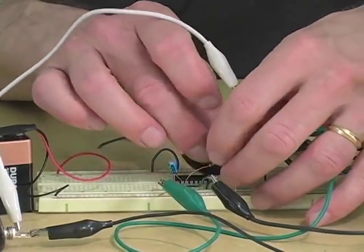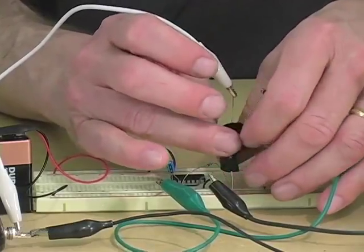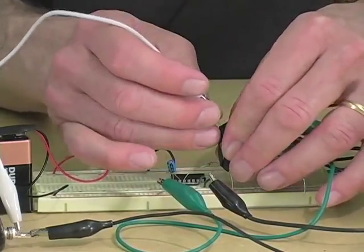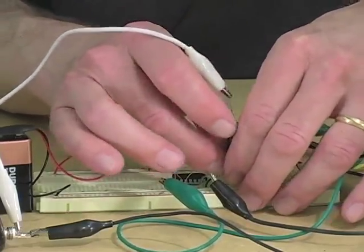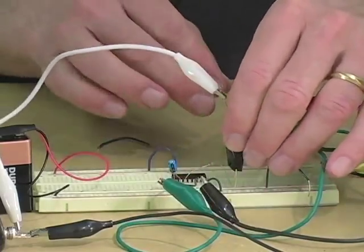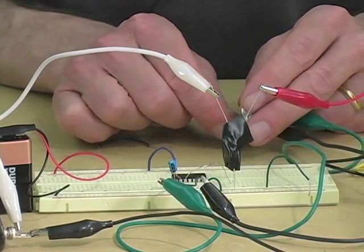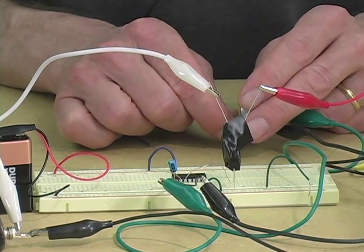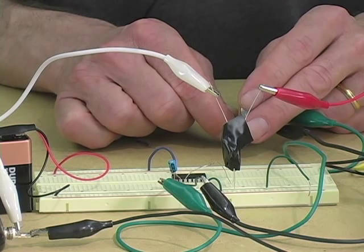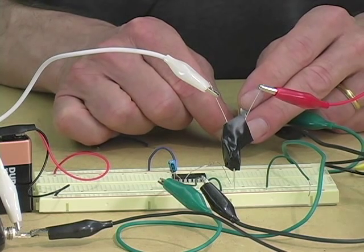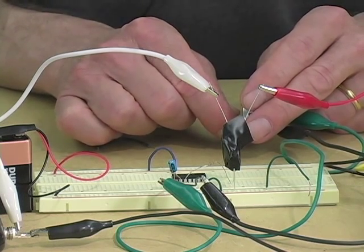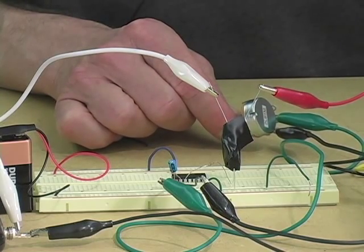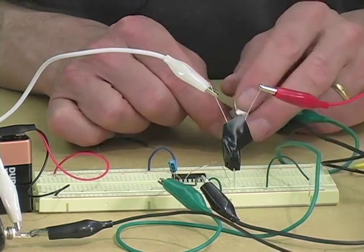And you'll notice that the music is turning on and off at the same rhythm that the LED was going at. I can make it go faster, until it sounds like a kind of a tremolo, almost vibrato sound.